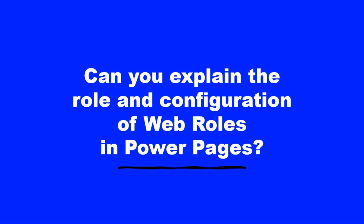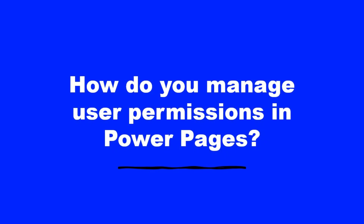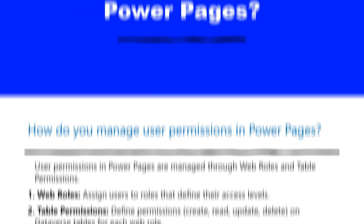Can you explain the role and configuration of web roles? In Power Pages, web roles are used to manage user permissions and access within a Power Pages portal. They determine what users can see and do based on their assigned roles. Configuration: One, navigate to the portal management app. Two, select web roles. Three, create a new web role and define its name and description. Four, assign table permissions, web page permissions, and other access controls to the web role. Five, associate users or contact records with the web role to apply the permissions.